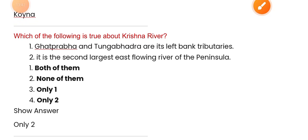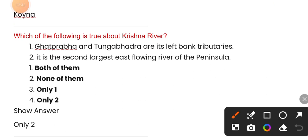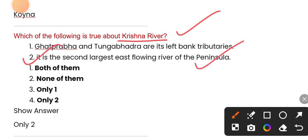Which of the following is true about the Krishna river? The correct answer is option 2 — it is the second largest east-flowing river of the peninsula.